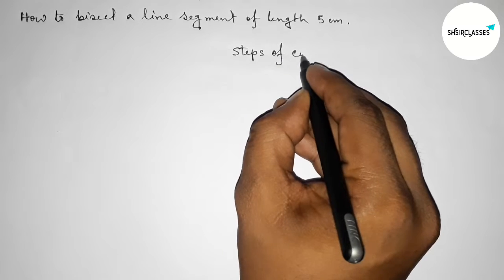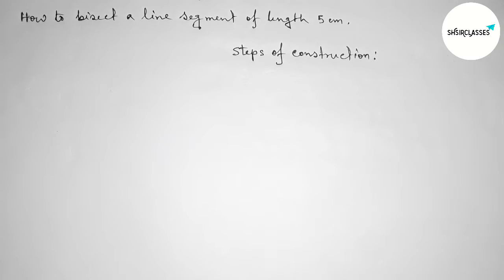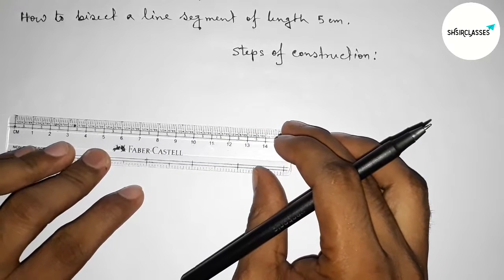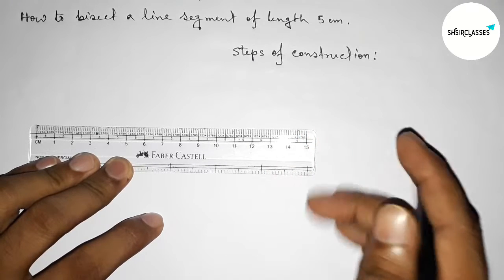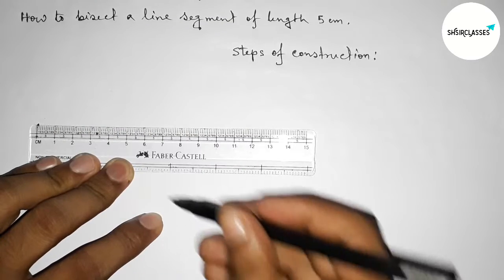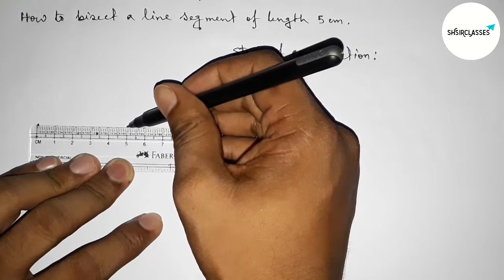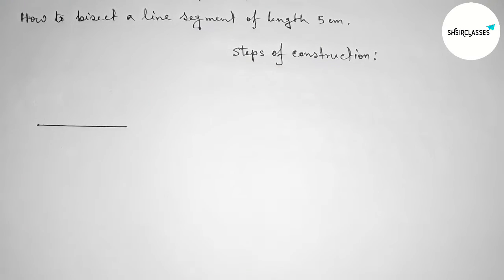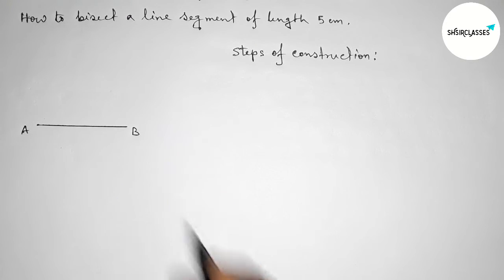Now first we have to draw here a line of length 5 centimeters by using a scale. So first drawing here a line, this is starting zero and this is one, two, three, four, five. So this is a 5 centimeter line.